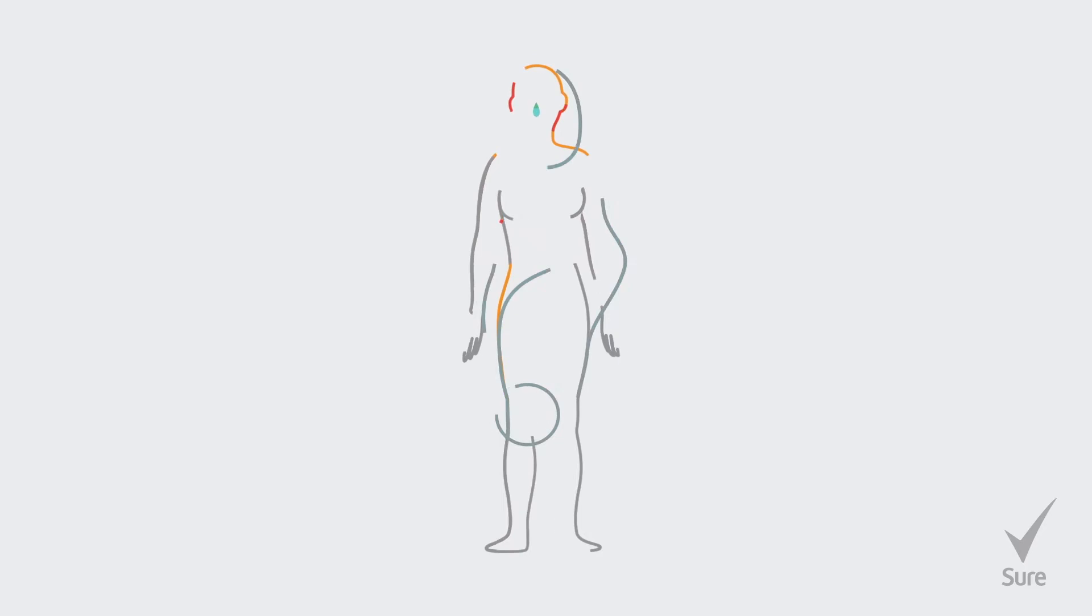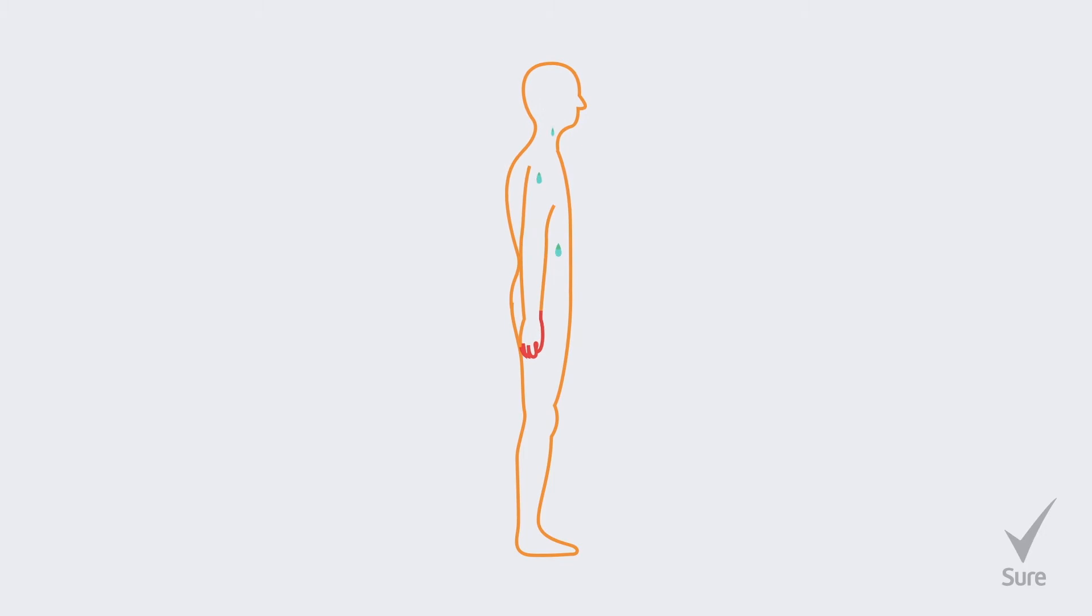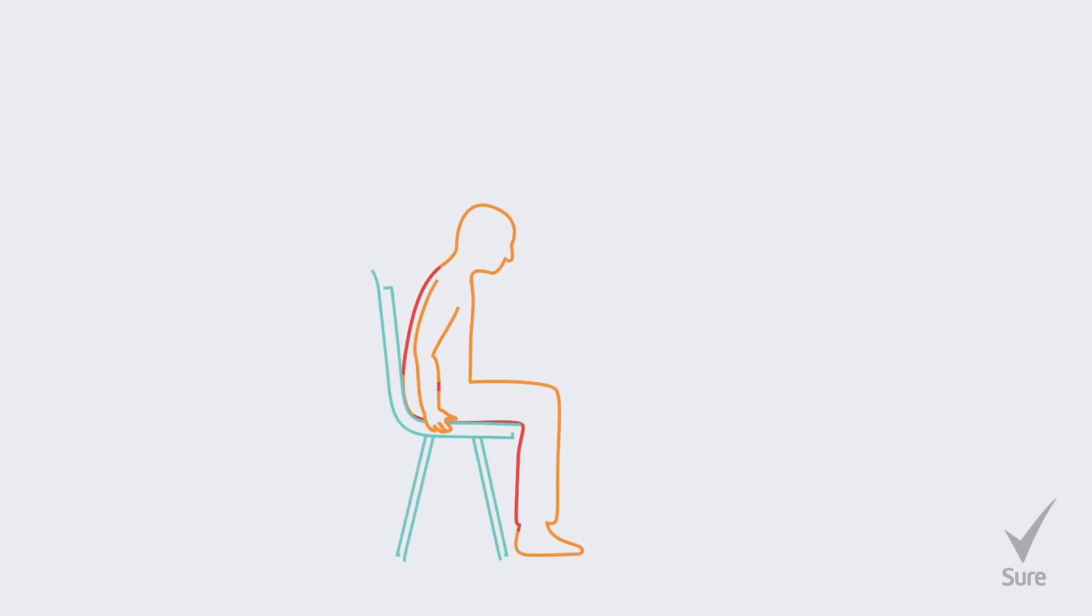But how do you know if you're sweating more than normal? If you sweat heavily outside of the previous situations, you could be experiencing excessive sweating. This is when you continue to sweat a lot, even when you're inactive or sitting still.